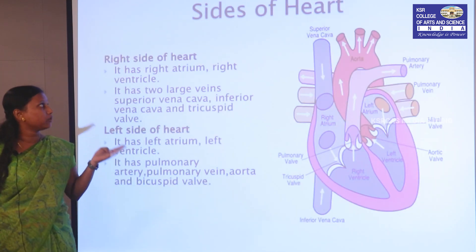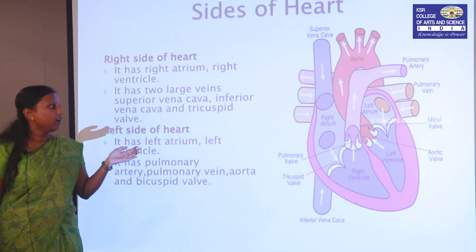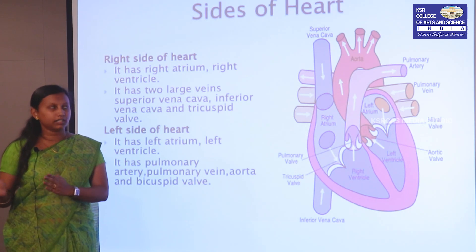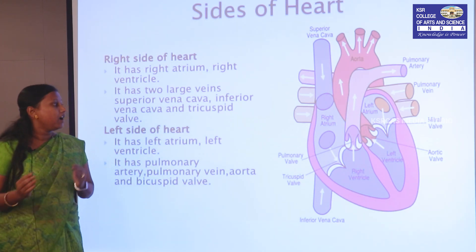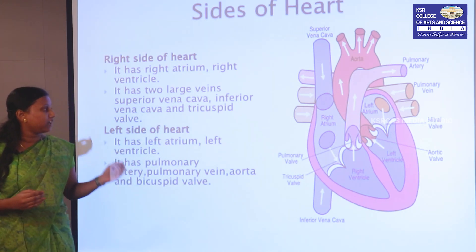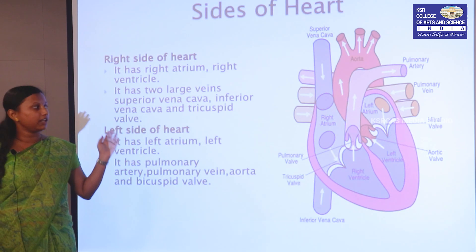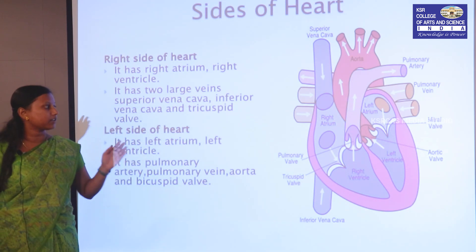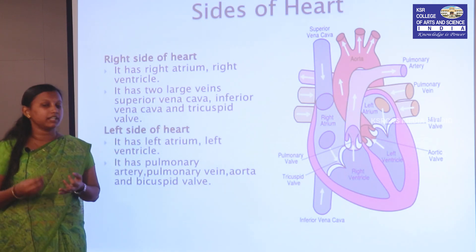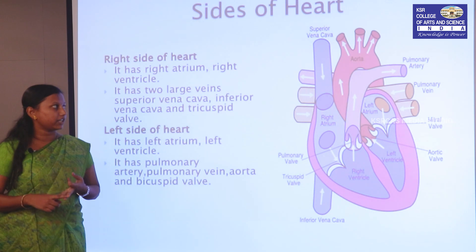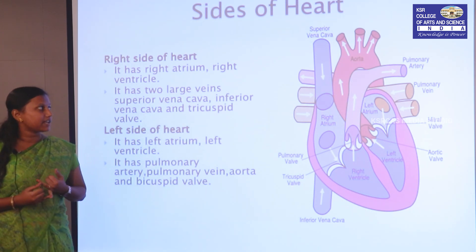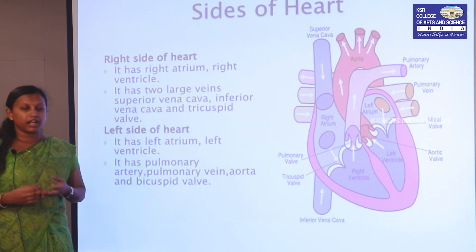Our heart is divided into two sides. The right side of the heart is composed of the pulmonary valve, tricuspid valve, inferior vena cava, and superior vena cava. The left side of the heart is composed of the aortic valve, left ventricle, pulmonary artery, pulmonary veins, mitral valve, and aorta.